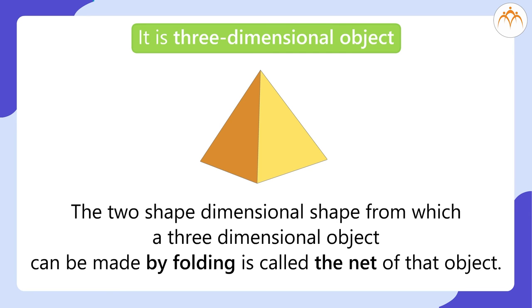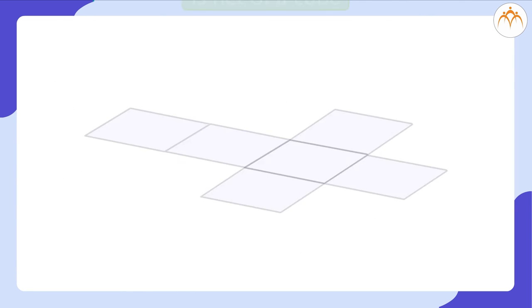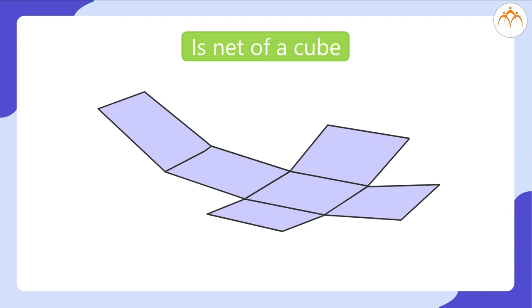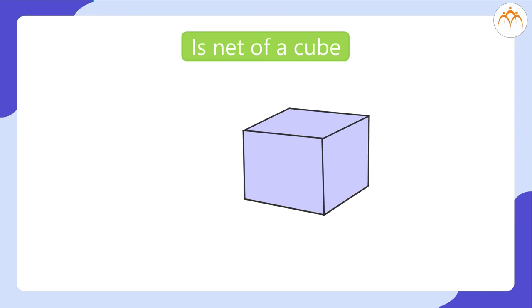Hence, this is the net of a pyramid, and this is the net of a cube. By folding it along the edges like this, we get a cube.